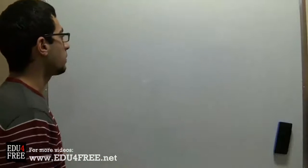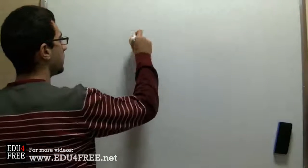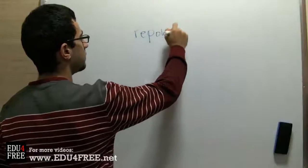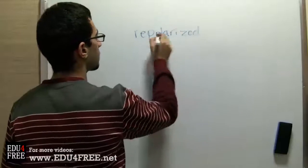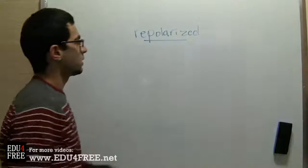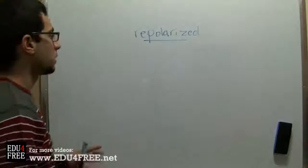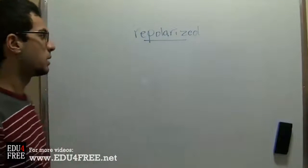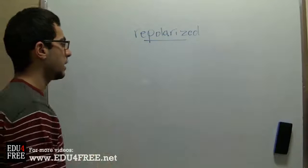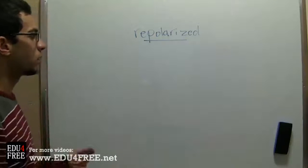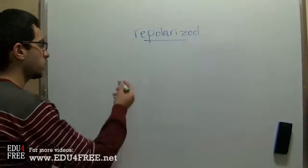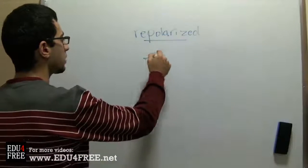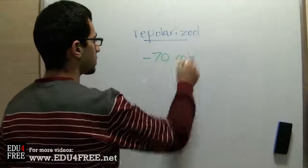Now the membrane of the axon is said to be repolarized, because it returns back to its original state where the positive ions accumulate on the outside and the negative ions on the inside. This leads to the return of the original potential difference, which is the resting potential, equal to negative 70 millivolts.